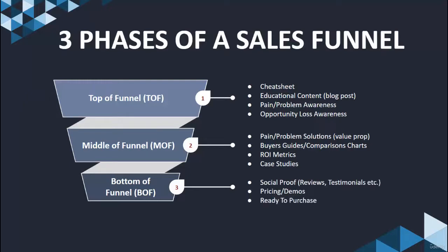At the bottom of the funnel, this is where you have social proof — reviews and testimonials. If you're running Facebook ads, for example, this is where you're going to have a retargeting audience that you've already shown a blog post or maybe they've downloaded an ebook or lead magnet. They're familiar with you already and have seen your brand multiple times. Now it's just a matter of presenting pricing and testimonials — people are at the buyer stage for the most part and are essentially ready to go.